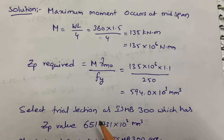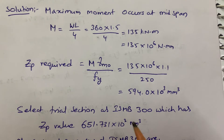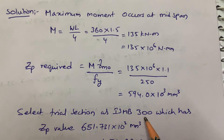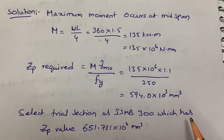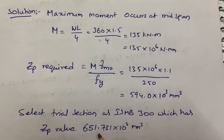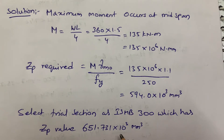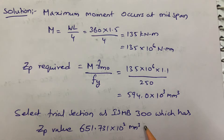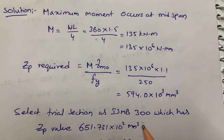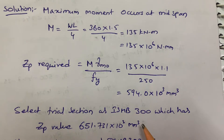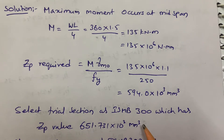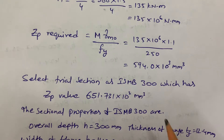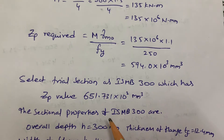Now we need to choose a trial section. I am taking ISMB 300 — Indian Standard Medium Beam 300 — which has a ZP value of 651.731 × 10³ mm³. This value is available in the steel tables book and also in the code book.